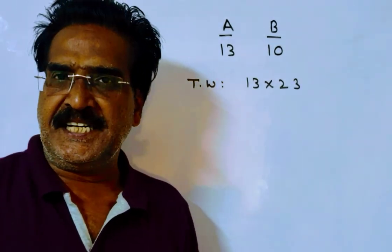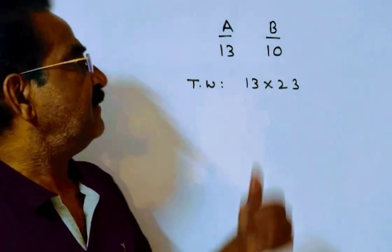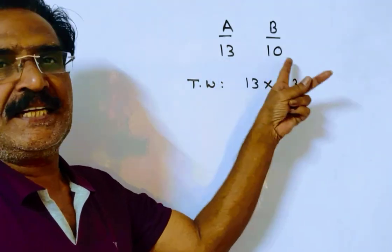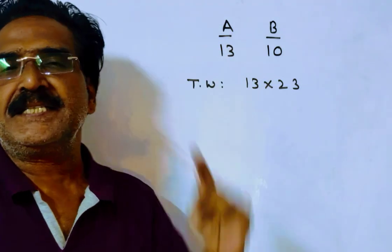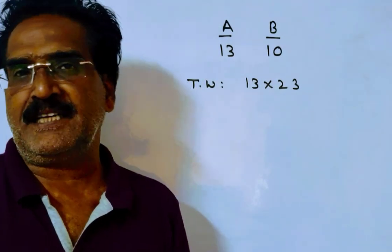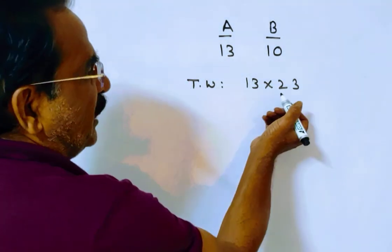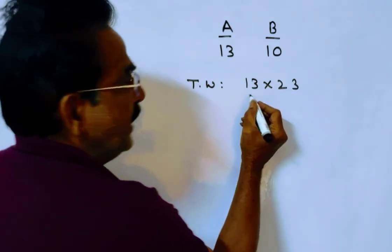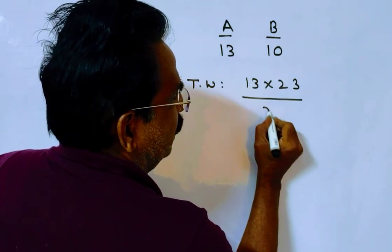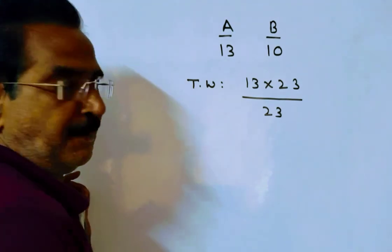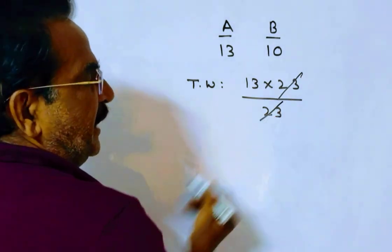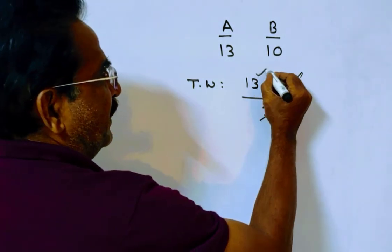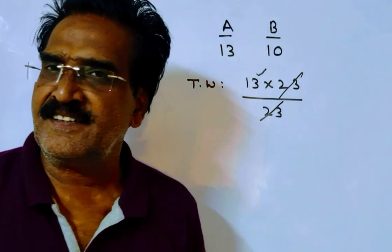Now, the question is in how many days can A and B together complete the work? A and B together can complete 13 plus 10, that's 23 units of work per day. So, total work is 13 into 23. A and B together can do 23 units of work per day. Therefore, A and B together can complete the work in 13 days. Thank you.